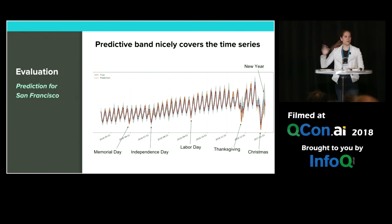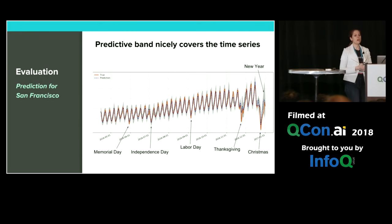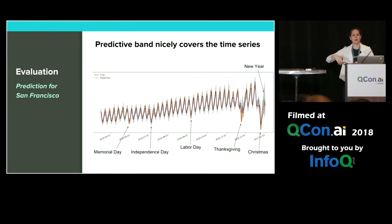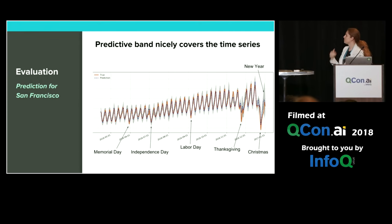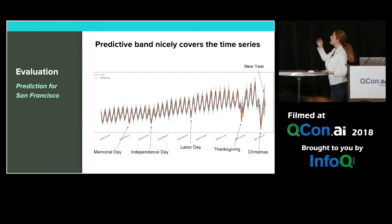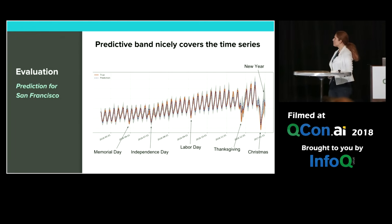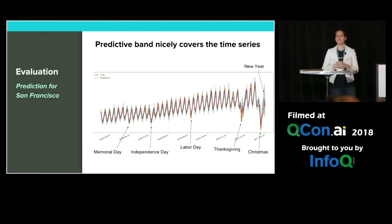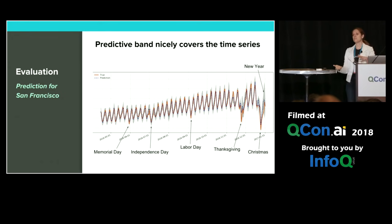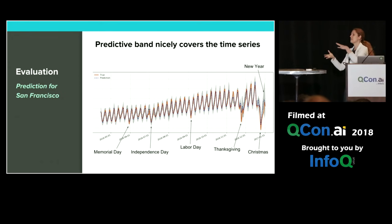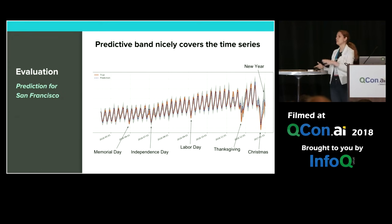Note how closely the predicted values shown in blue match the actual values in orange. Over that, we've laid the 95% prediction intervals, and you can see they very nicely encapsulate the true values.